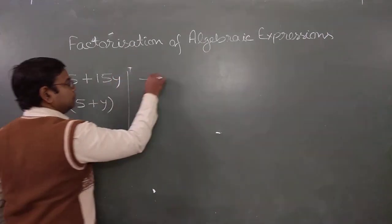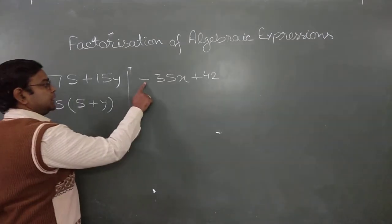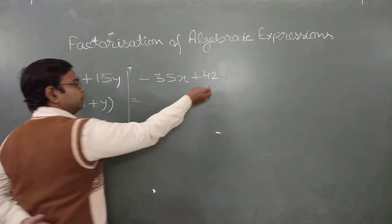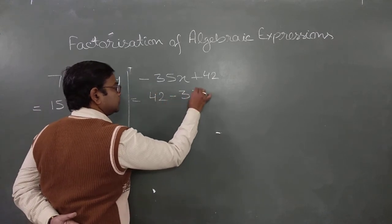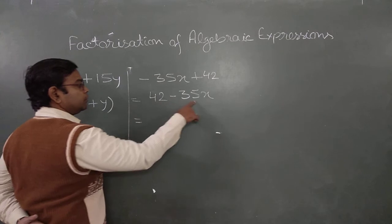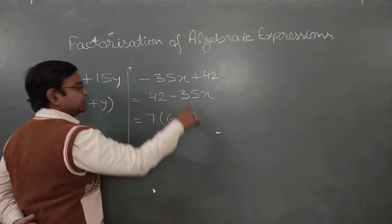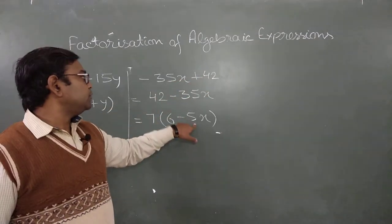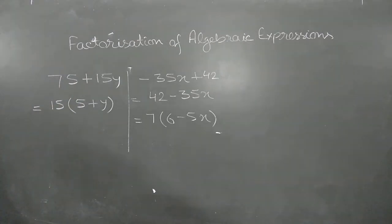Next: -35x + 42. The minus sign is at first. We can interchange the placement and shift +42 in front: 42 - 35x. Now, 7 into 6 is 42 and 7 into 5 is 35, so 7 is the common factor. So we write 7(6 - 5x). Check: 7 into 6 is 42 and 7 into minus 5x is minus 35x. Correct.